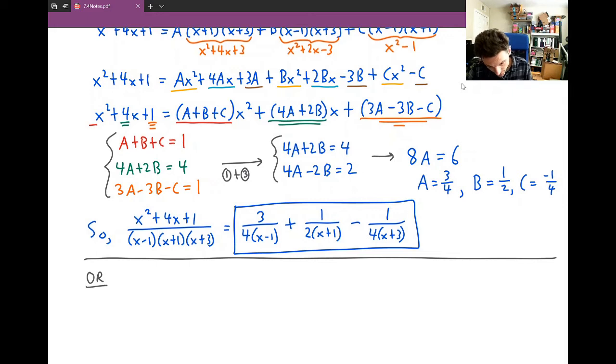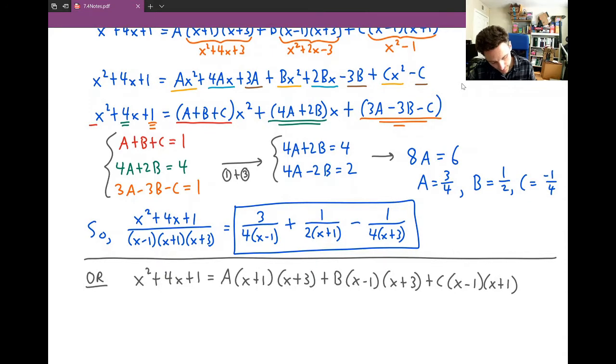We're going to write down x² + 4x + 1 = A(x+1)(x+3) + B(x-1)(x+3) + C(x-1)(x+1).